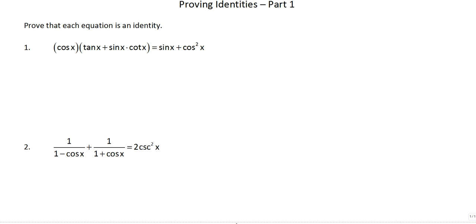Again, it's easier to take something big and make it smaller. So I am going to work on the left side and turn it into the right side. The first thing I am going to do is rewrite the tangent and cotangent. Now, you can just distribute right now if you want to — there are so many different ways to do these identities. But the reason I'm choosing this is because your final answer is in terms of sine and cosine only, so I'm just going to get rid of the tangent first.